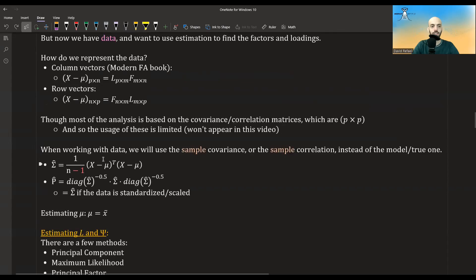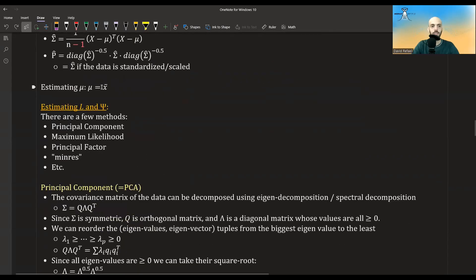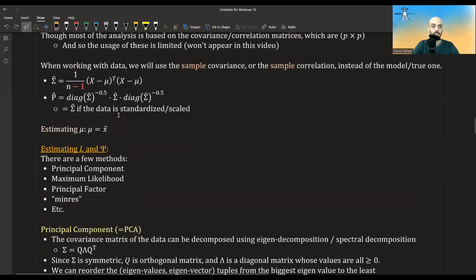Okay, how do we estimate all the different quantities that we have in our model? Well, the mu is very easy. We will just estimate it to be the mean of the variables from our data.